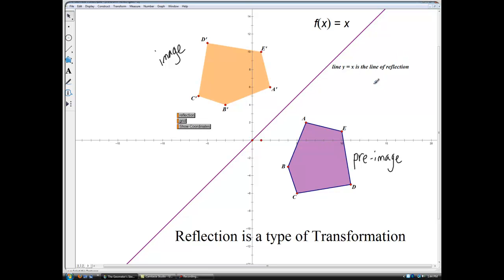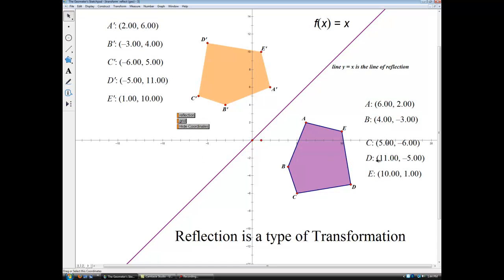And the last thing I want you to see on this screen is see if you can find a pattern between the coordinates. So let's take a look at the coordinates of the pre-image. For instance, A is (6, 2). On the image, look what happens to A prime: (2, 6).